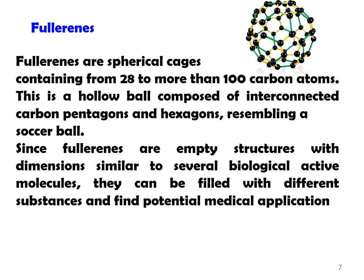We next look at three-dimensional nanoparticles of carbon, called fullerenes. Fullerenes are spherical cages containing anywhere from 28 to more than 100 carbon atoms. The diameter of the sphere changes depending on the number of carbon atoms, but the size remains in the nanometric range. This is basically a hollow structure composed of interconnected carbon pentagons and hexagons, and for stability purposes it is spherical — it resembles a soccer ball.